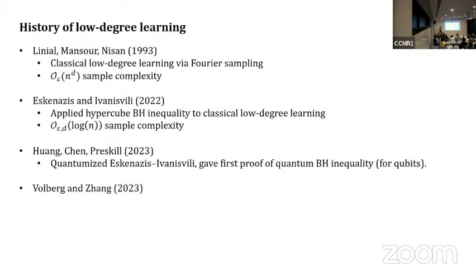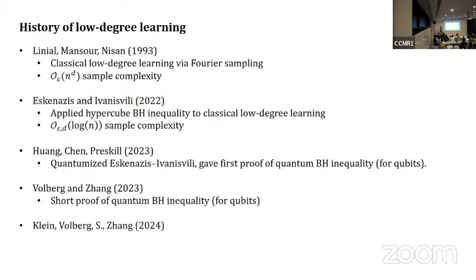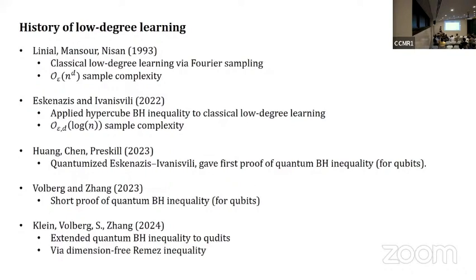Volberg and Zhang around the same time produced a very short proof of the same inequality with slightly improved constants. Finally this year, along with myself and Klein, we extended this collection of inequalities to qudits, not just qubits. This ended up being rather difficult.